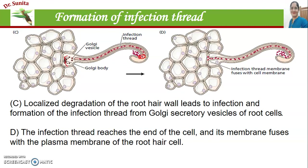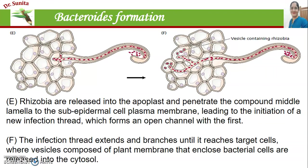The bacteria secrete enzymes that degrade the cell wall, leading to formation of an infection thread. This infection thread then fuses with the plasma membrane of the root hair cell. After fusion of the infection thread with the plasma membrane, the bacteria are released into the apoplast and penetrate the compound middle lamella and sub-epidermal cell plasma membranes. Multiple infection thread branches extend large into the root hair or root cells, and then these infection threads release the bacteria into the cytosol of these cells.